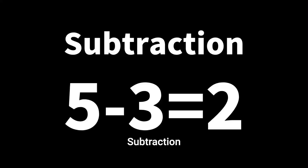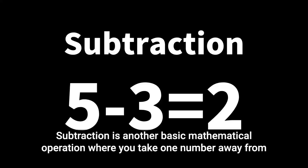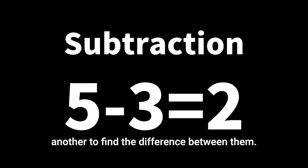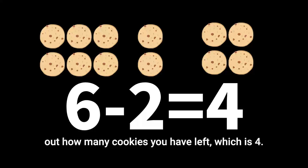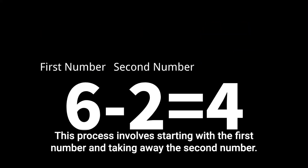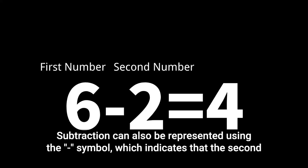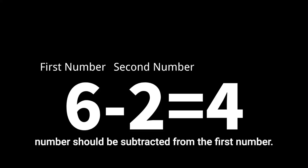Subtraction is another basic mathematical operation where you take one number away from another to find the difference between them. For example, if you have six cookies and you eat two of them, you can subtract two from six to find out how many cookies you have left, which is four. This process involves starting with the first number and taking away the second number. Subtraction can also be represented using the minus symbol, which indicates that the second number should be subtracted from the first number.